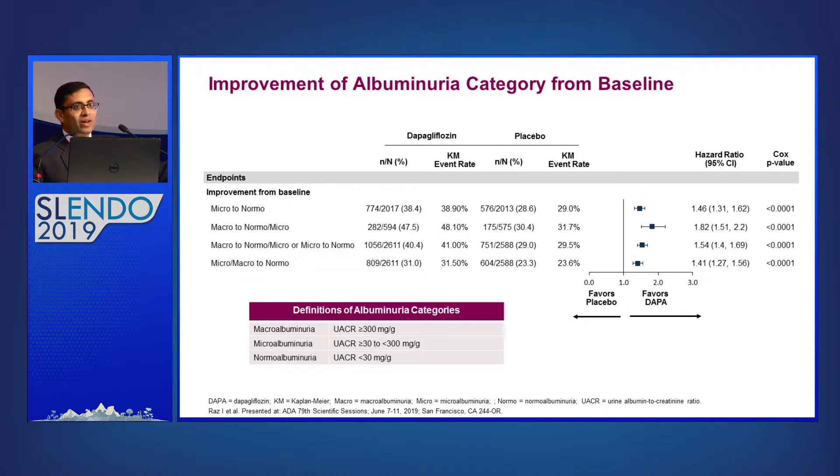Importantly, dapagliflozin also prevents patients from progressing from microalbuminuria to macroalbuminuria, and leads to regression from micro to normal albuminuria. From this forest plot, adding dapagliflozin gives around a 46 percent chance of patients moving from micro to normal albuminuria. This is not a small thing — we know that ACE inhibitors and ARBs also reduce albuminuria, but this drug class had these effects on top of ACE inhibitors and ARBs, as most patients in DECLARE were already on them. Deterioration of albuminuria category was greater in patients on placebo compared to dapagliflozin.